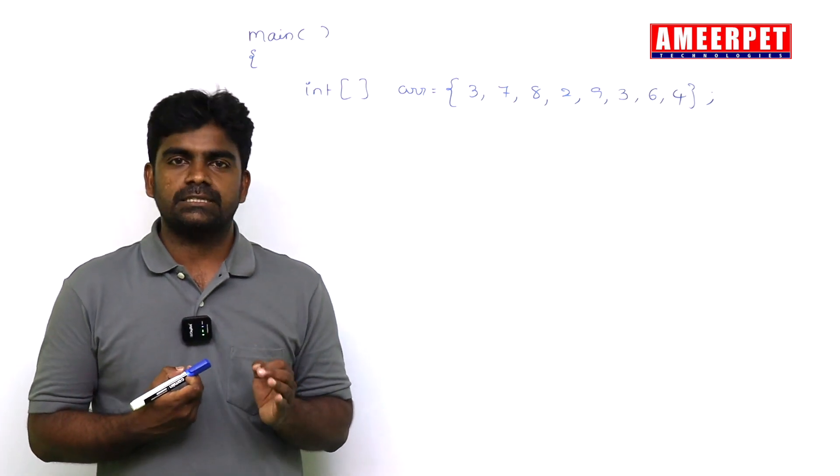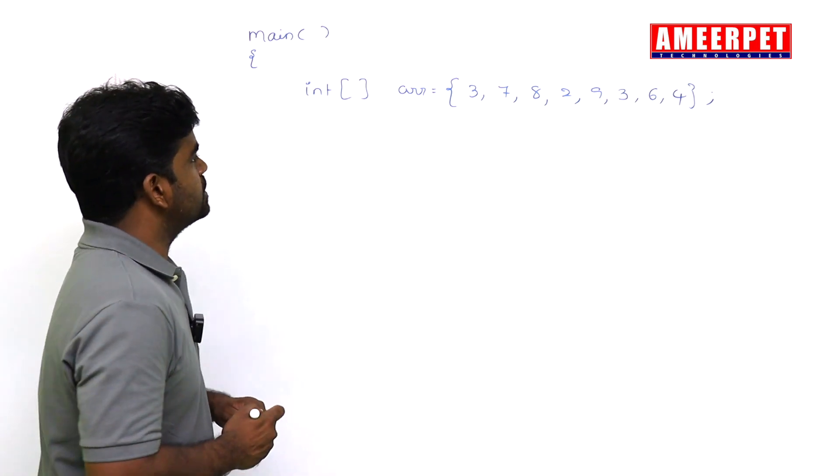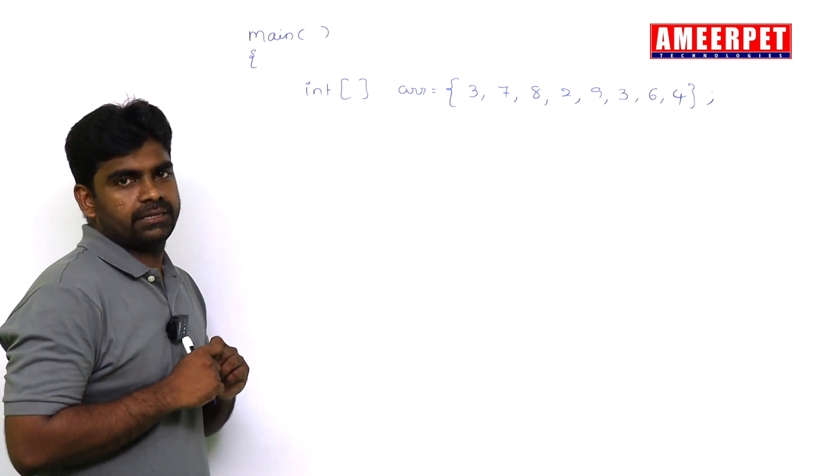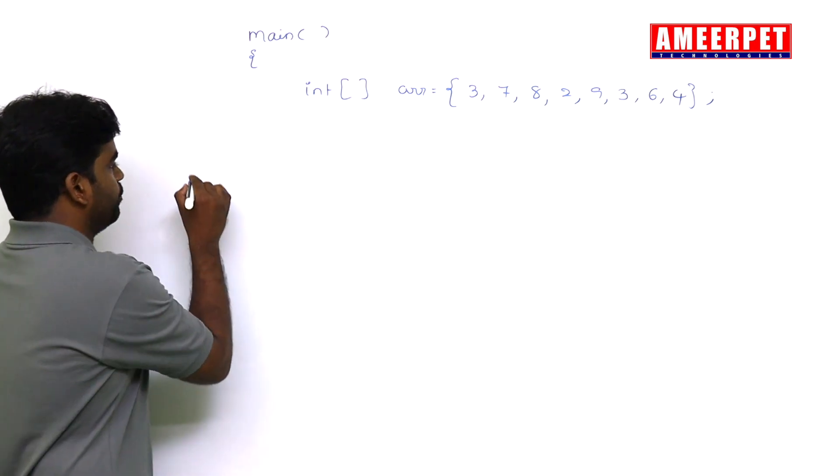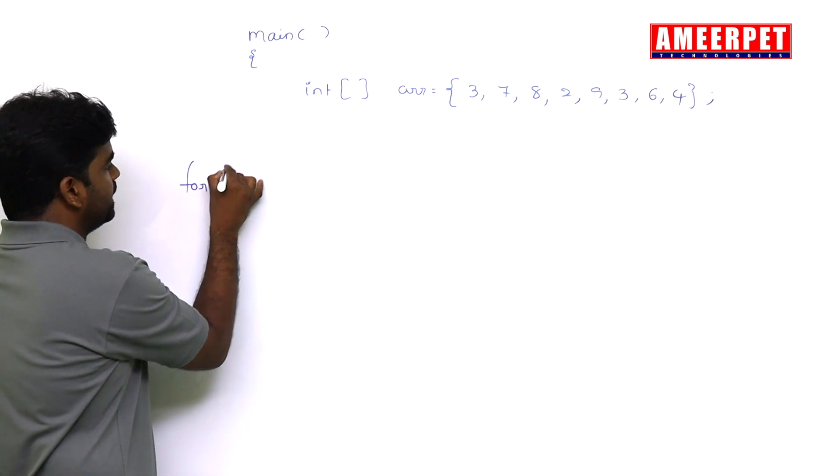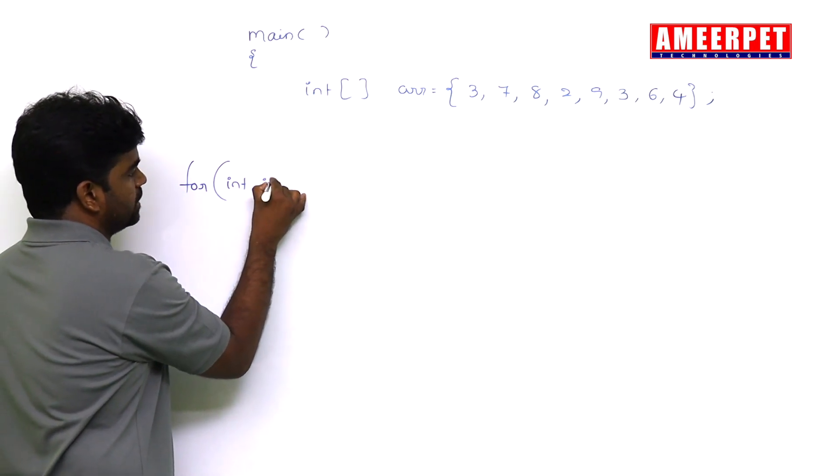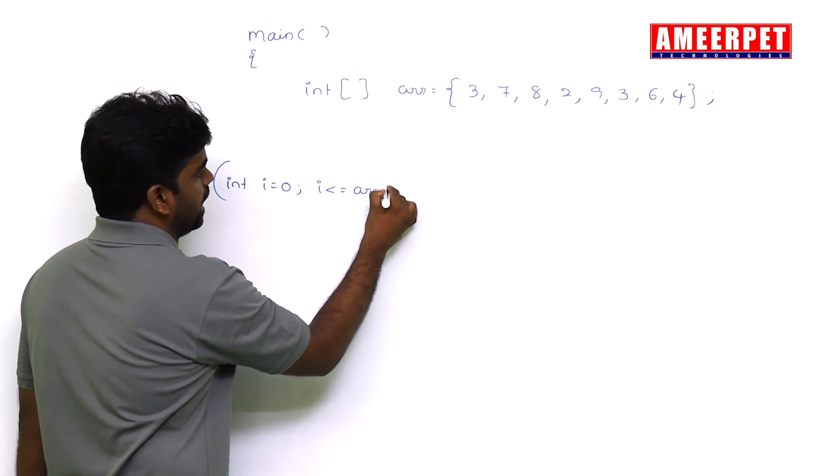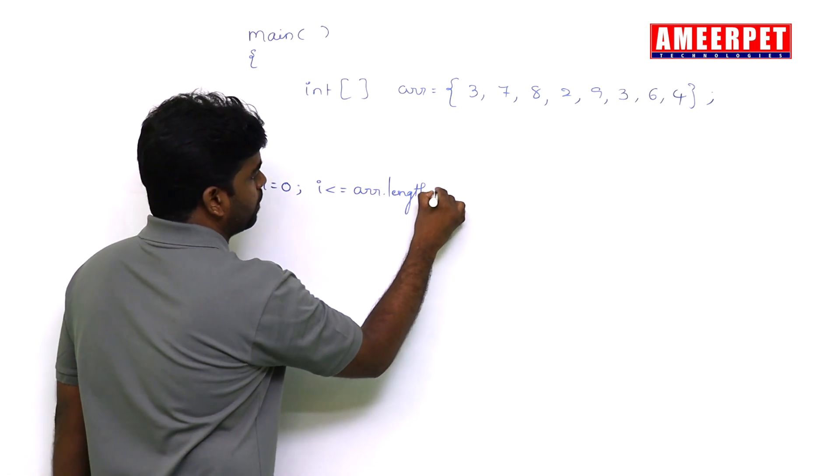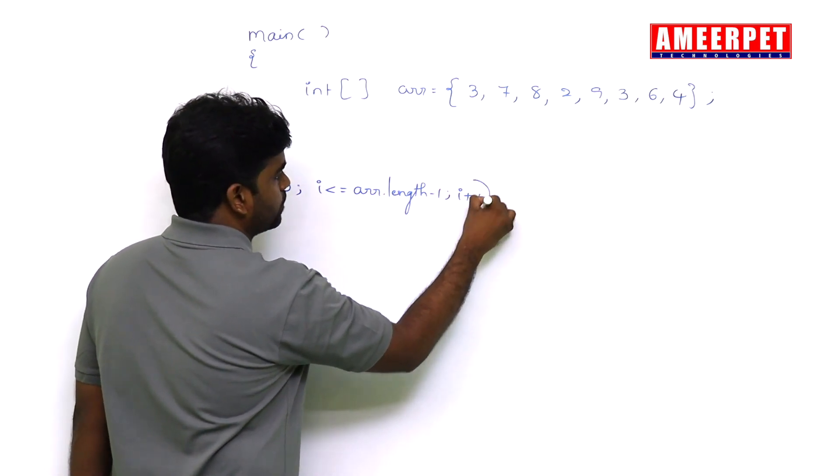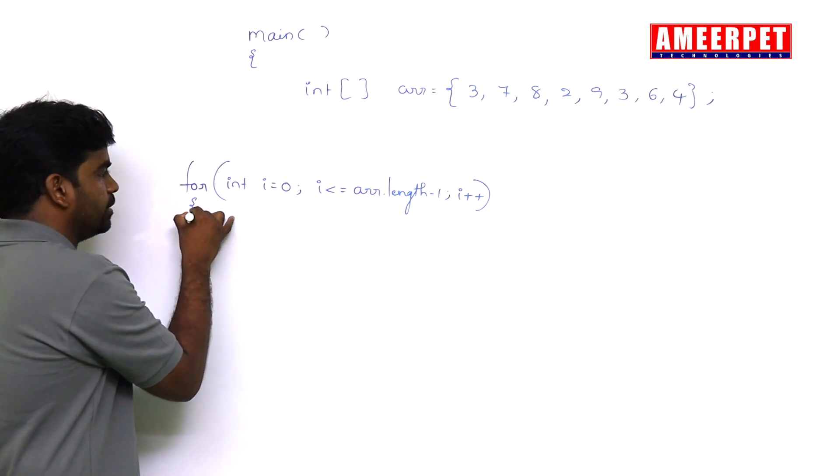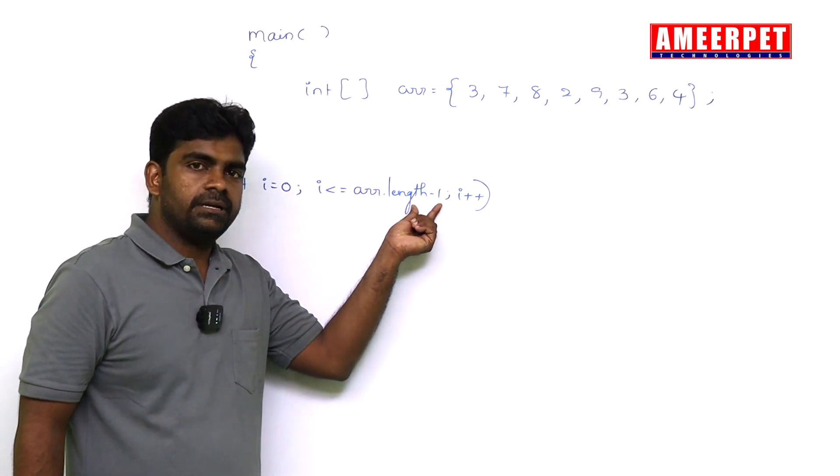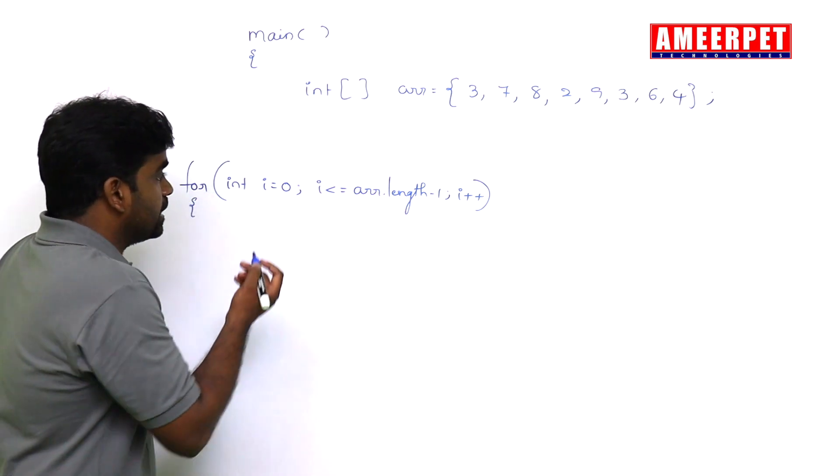What are the advantages and what are the limitations I'll also tell you. See, suppose I'm taking one array of elements and I want to display all elements of the array. So generally what we will use? For loop. For index, index starting with zero, right? Here it is ending with arr.length, the total length minus one, i++.